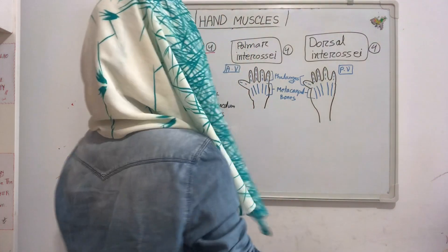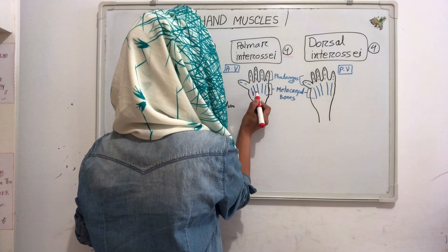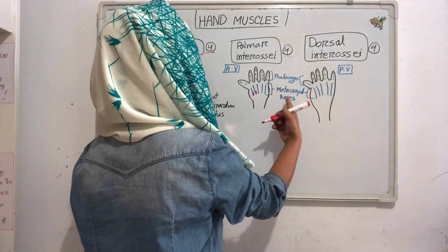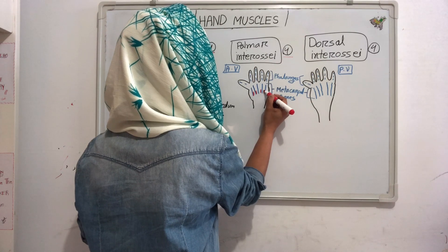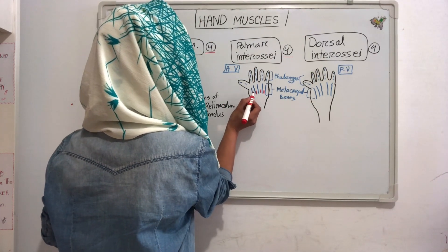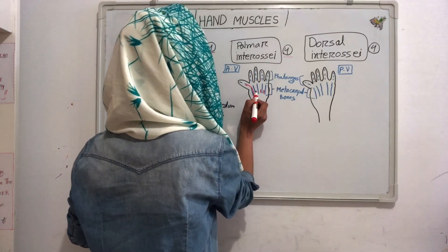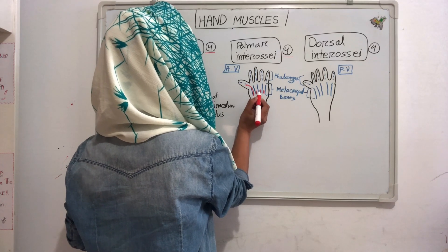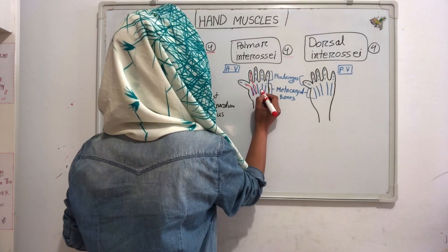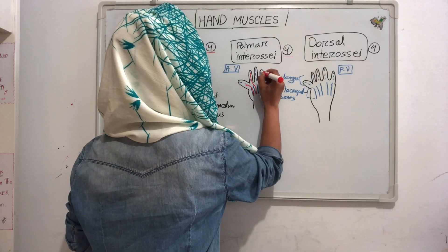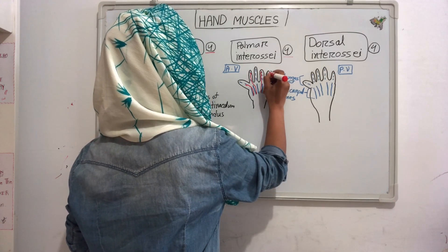Now we will see our palmar interossei muscles. The first palmar interosseous originates from the medial side of the second metacarpal bone, and its insertion is into the proximal phalanx of the thumb. The second palmar interosseous insertion is into the distal phalanx of the second digit. The third palmar interosseous insertion is into the distal phalanx of the third digit. The fourth palmar interosseous insertion is into the distal phalanx.